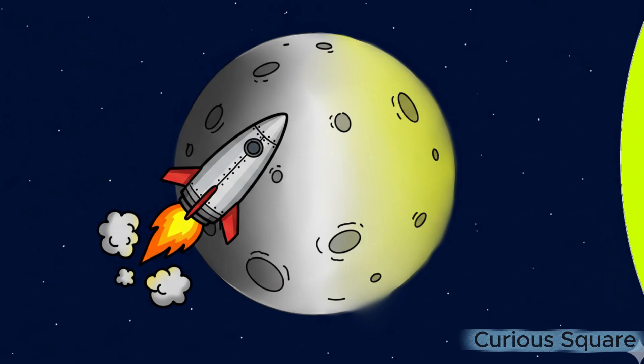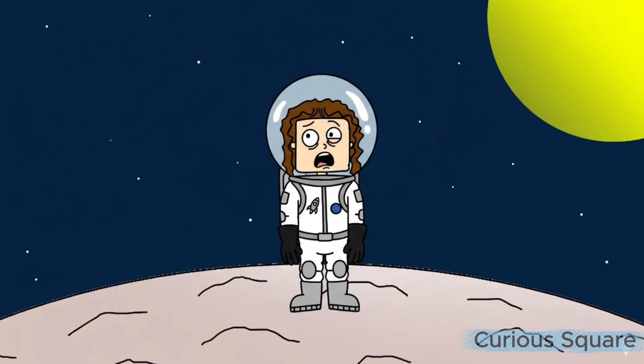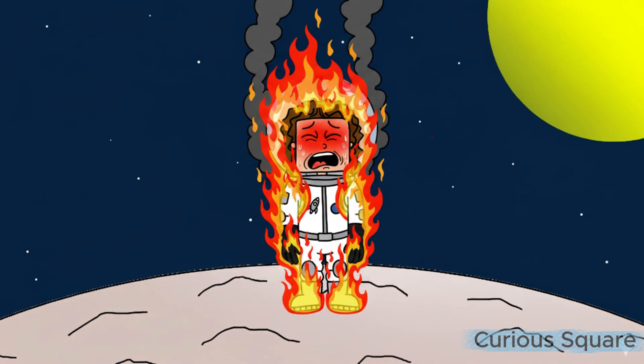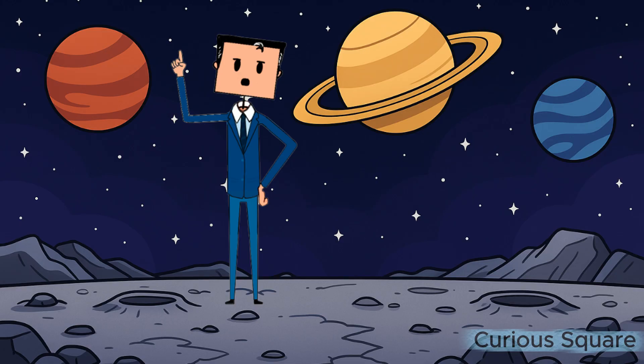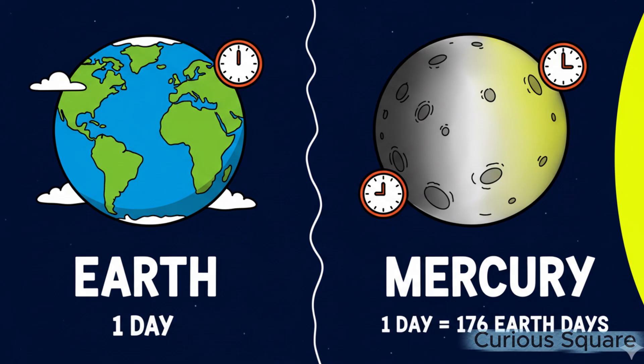Landing during the day is out of the question due to the extreme heat, since even the most advanced spacesuits can only withstand up to 121 degrees Celsius, far from the 430 degrees Celsius on the surface. It's also worth remembering that a day on Mercury lasts almost half an Earth year because of its slow rotation.